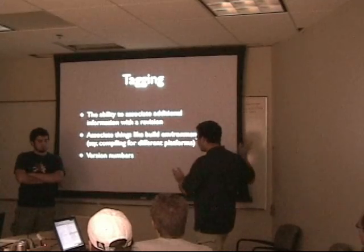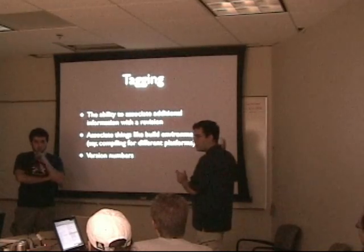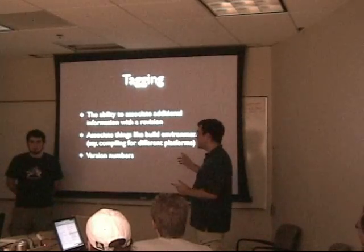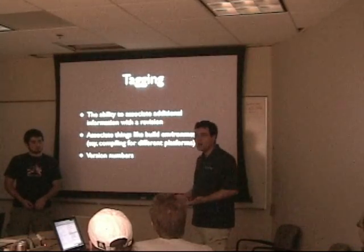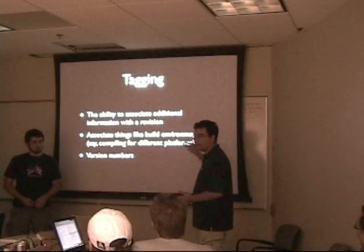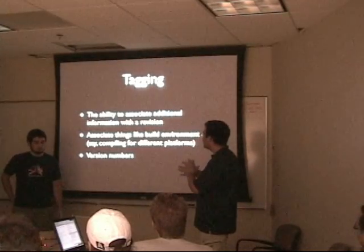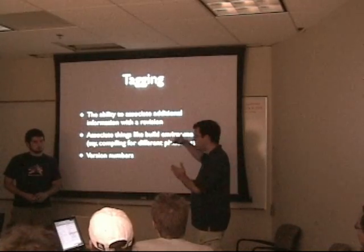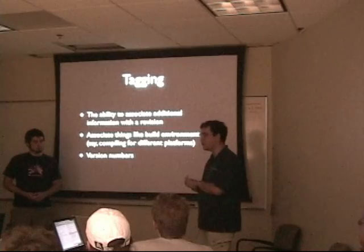That way, if you're in the future and you want to go back to see what things were like at version 1.0, instead of remembering you need revision 12, you can just say 'I want revision 1.0.' Branching and tagging are kind of the same thing — branching is essentially a tag on every single revision.